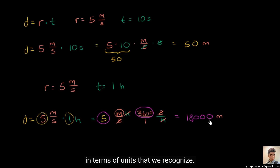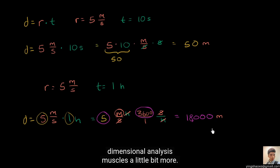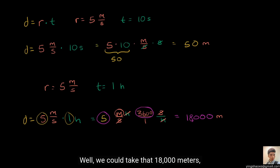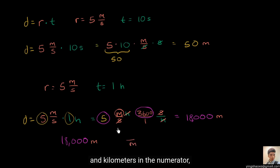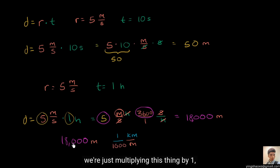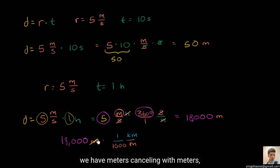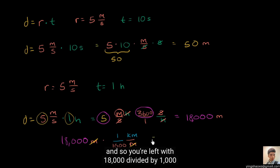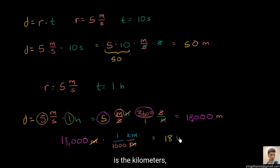We've now expressed our distance in terms of units that we recognize. If you go five meters per second for one hour, you will go 18,000 meters. But let's use our dimensional analysis muscles a little bit more. What if we didn't want the answer in meters but wanted the answer in kilometers? Well, we could take 18,000 meters and multiply it by something that has meters in the denominator and kilometers in the numerator — then these meters would cancel and we'd be left with kilometers. We want to multiply by essentially one, so we write equivalent things in numerator and denominator: one kilometer is equivalent to 1,000 meters. So one kilometer over a thousand meters is equivalent to one. When you multiply, meters cancel with meters, and you're left with 18,000 divided by 1,000, which is equal to 18 kilometers. We have re-expressed our distance in terms of kilometers.